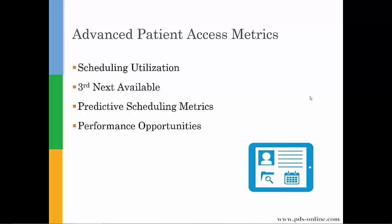Once we have basic metrics in place and have addressed the barriers to good reporting, we can move on to more advanced metrics. These are the ones that anytime someone asks about patient access, what they really need is scheduling utilization and third next available. They often say, 'I can't get those out of my scheduling system, or it's not calculating them the right way.' These really are kind of the ultimate goal of patient access reporting because this is where you can dig in and understand where your outliers are — but they are very complex data sets, some of the most complex that we work with.